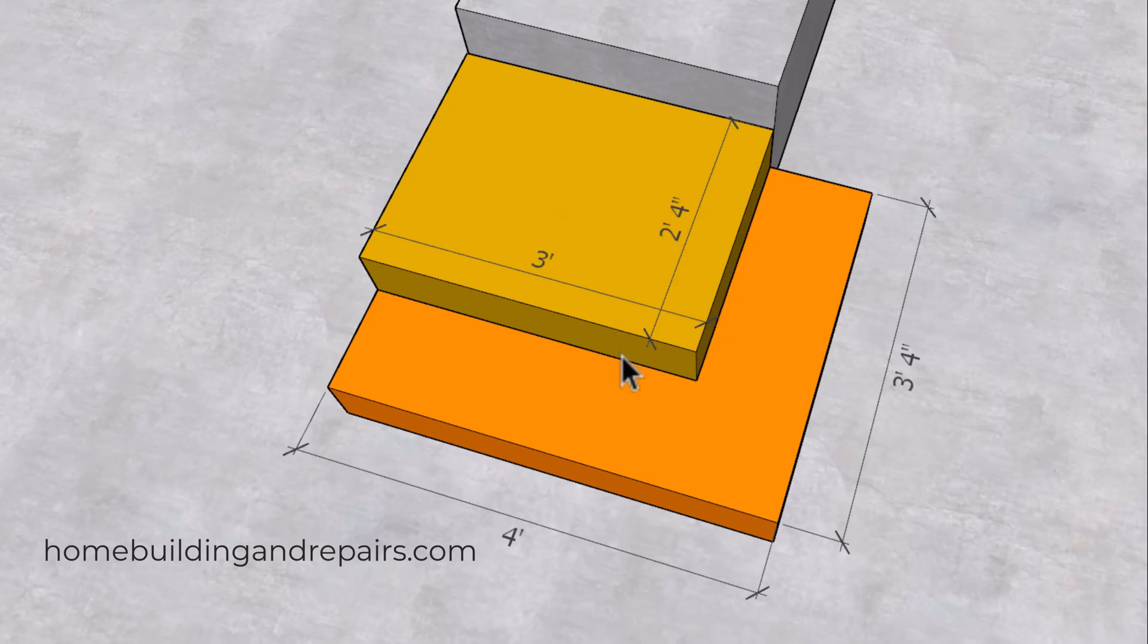However, if we add another step we do have a problem, because now we don't have the minimum width which is 36 inches or three foot. So even though we have our one foot stair tread depth going all the way around, we don't have our minimum width here.